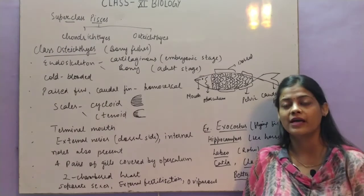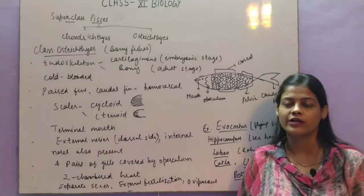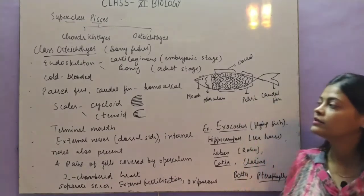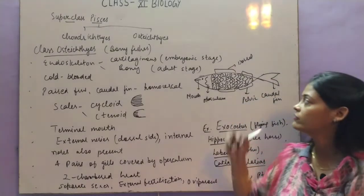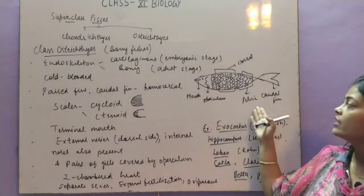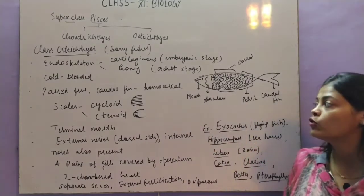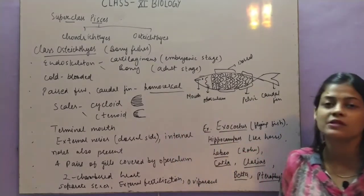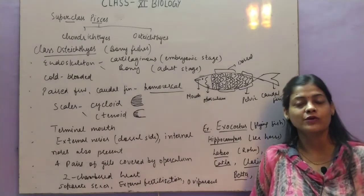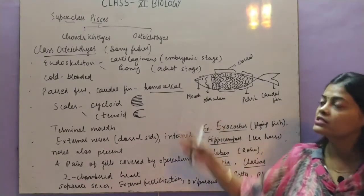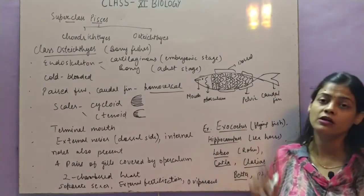They are again cold-blooded organisms that can change their body temperature according to the external environment. Paired fins are present — same dorsal fin, pectoral fin, pelvic fin, and caudal fin. But the caudal fin is homocercal, meaning the two parts of the fin are equal. This is one key difference between Chondrichthyes and Osteichthyes.